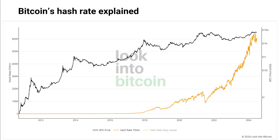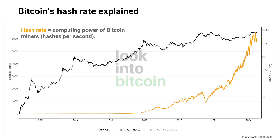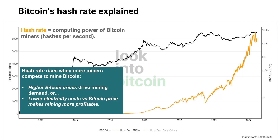Before I explain the Bitcoin Hash Ribbons indicator, let's first understand the Bitcoin hash rate, which is shown in orange in this chart from Look Into Bitcoin. Put simply, the hash rate is the computing power Bitcoin miners use, measured in hashes per second. The hash rate rises when more miners compete to mine Bitcoin. Typically, this happens when Bitcoin's price is relatively high, as there's more financial incentive for them to mine.